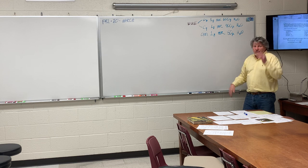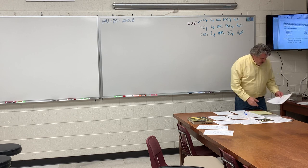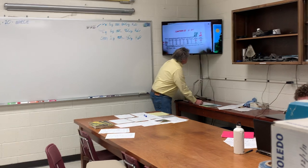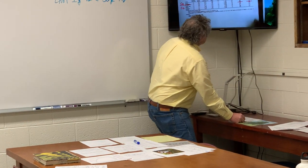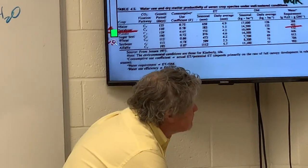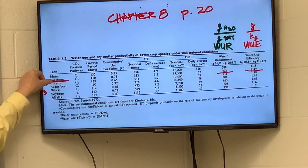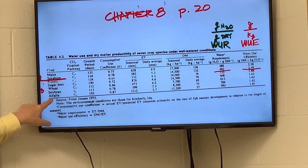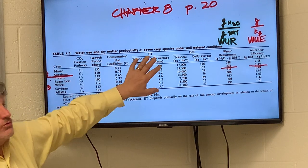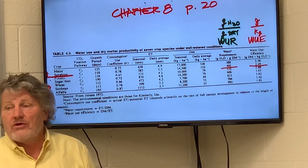Let's look at how typical these values are. Here is a table from the textbook showing two C4 crops — maize and sorghum — and then a whole bunch of C3 crops: potatoes, wheat, soybeans, alfalfa. The table shows how much water they used, what yield they produced, and the ratio of yield to water is the water use efficiency.